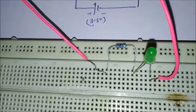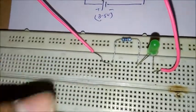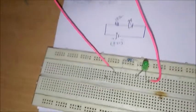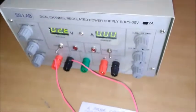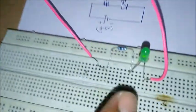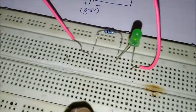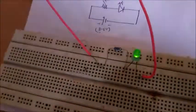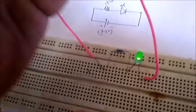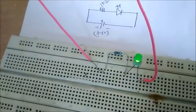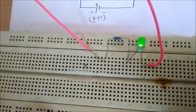Now you can see that the LED is glowing automatically. So this is how we can design a simple circuit using an LED.